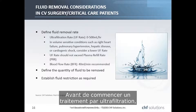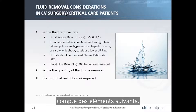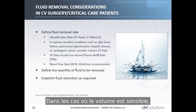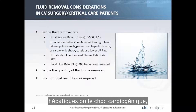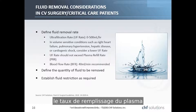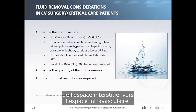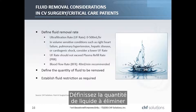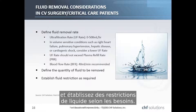Prior to initiating ultrafiltration therapy, prescribers should consider the following: define the fluid removal rate—the UF rate can be set from 0 to 500 mL per hour. In volume-sensitive conditions such as right heart failure, pulmonary hypertension, hepatic disease, or cardiogenic shock, consider a lower UF rate. The UF rate should not exceed the plasma refill rate. The recommended blood flow rate is 40 mL per minute. Define the quantity of fluid to be removed and establish fluid restrictions as required.